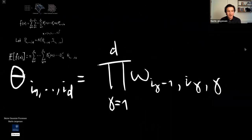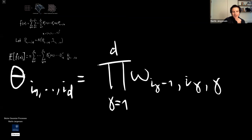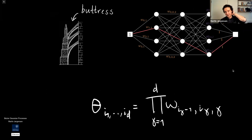Now let's talk about how to scale this. There's no matrix inverse, which is good, but there's potentially a very big sum. We say that each of the theta's — the mean of the control points — is going to split out into a product up to D, the input dimension, involving W matrices. We call this the Bézier buttress. Mike told me a buttress is something that supports a building, so you can think of this as something that supports our Bézier construction.